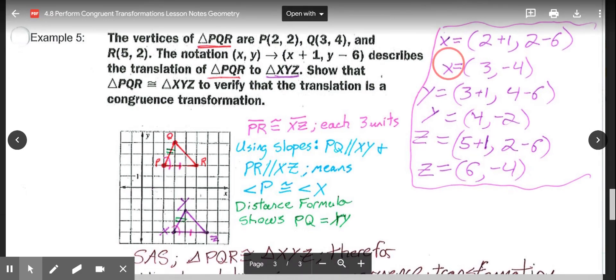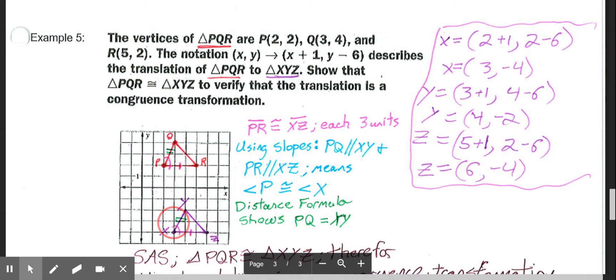So then I'm going to take my coordinates for X, Y, and Z and graph those. So I have my triangle down here, X, Y, Z.